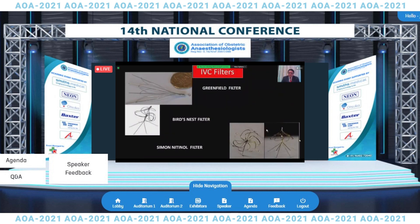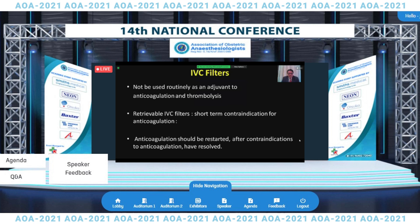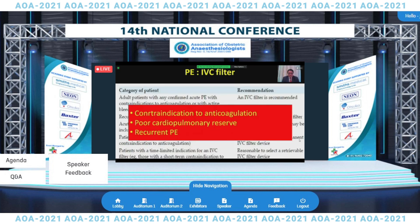Another aspect is the use of IVC filters. Multiple commercial filters are available, but they cannot be used routinely as an addition to anticoagulation. Mostly retrievable filters are used so they can be taken out after a short time. Anticoagulation should be restarted once contraindications have resolved. The three major indications for IVC filters are: contraindication to anticoagulation, poor cardiopulmonary reserve, and possibility of recurrent pulmonary embolism.